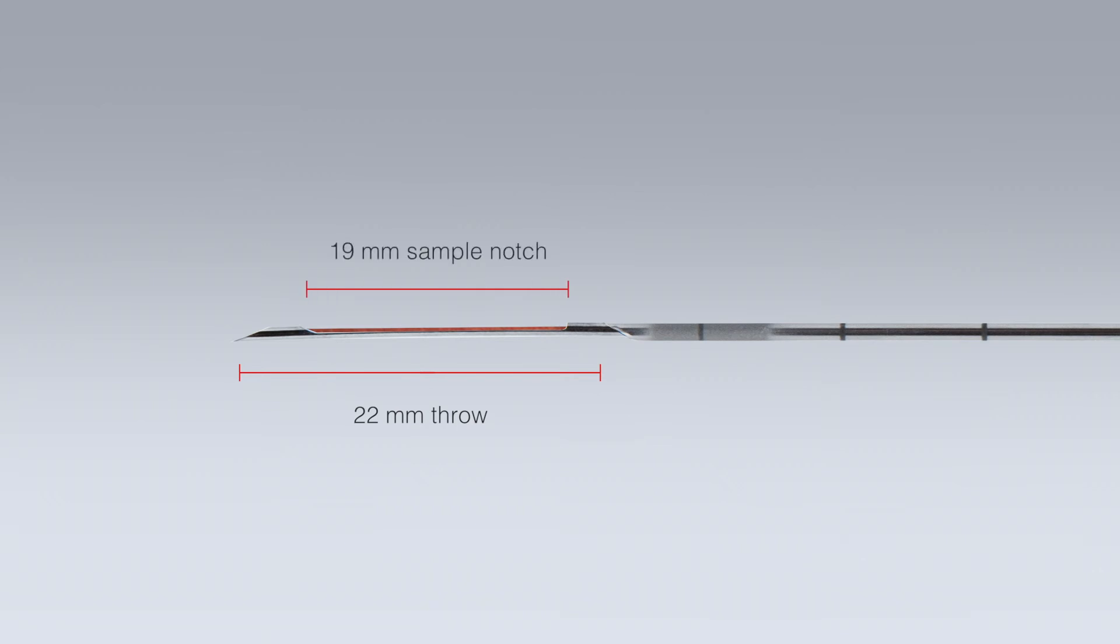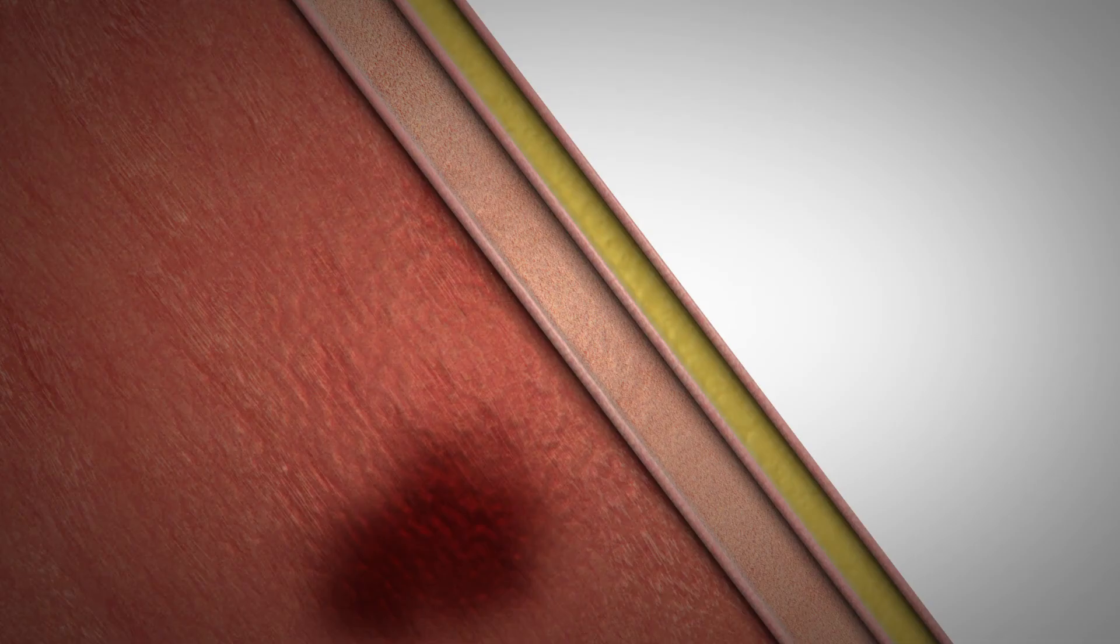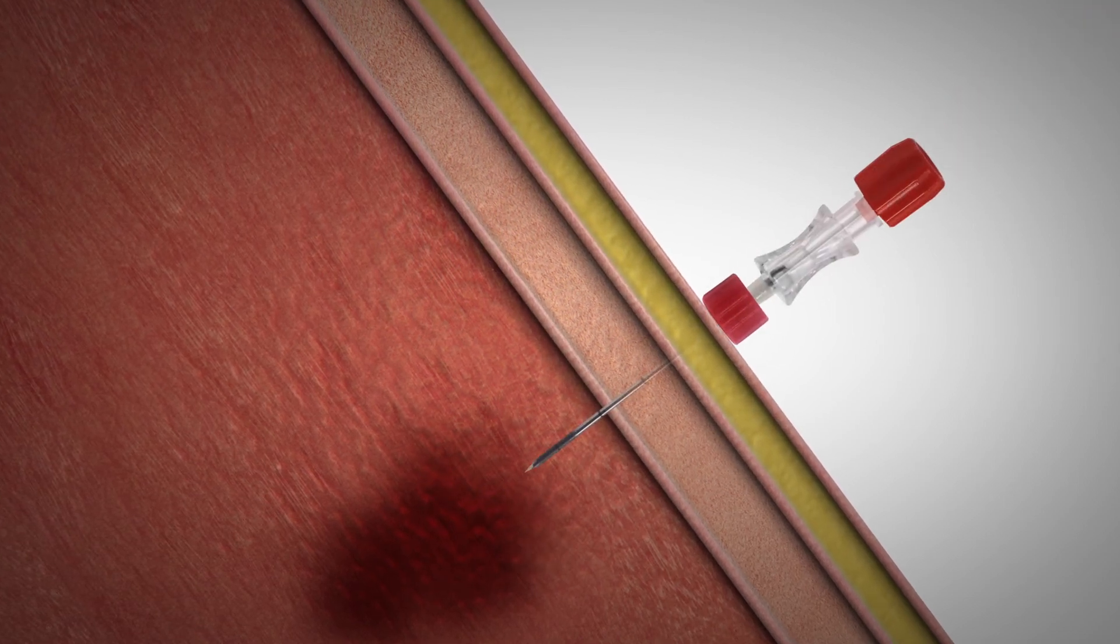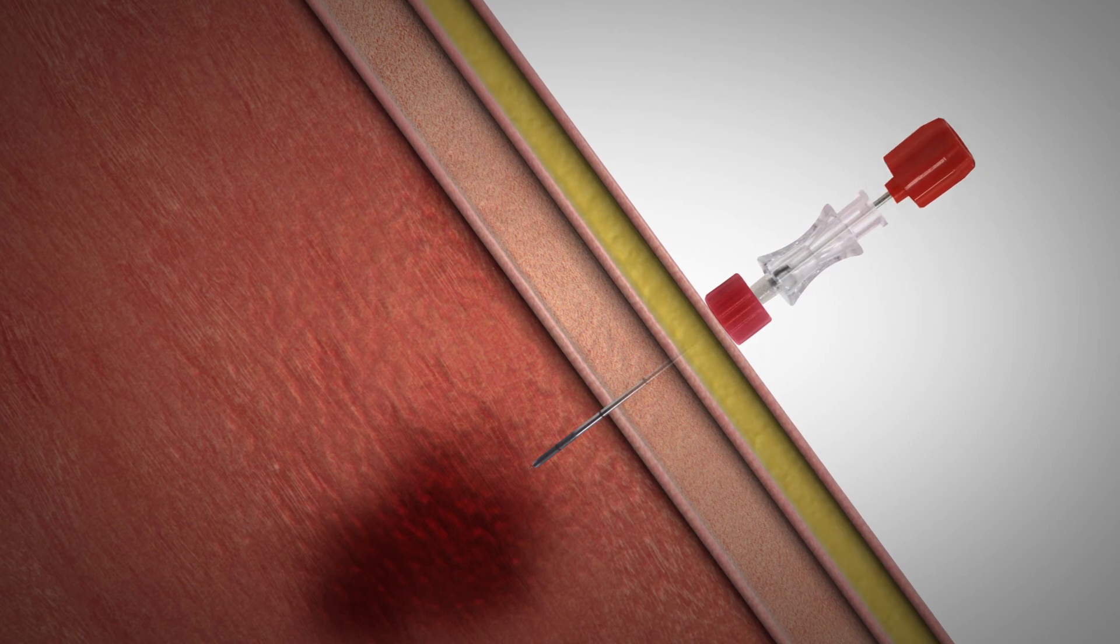If a coaxial needle is used for multiple biopsies, first insert the coaxial introducer needle with stylet to the point to be biopsied and remove the stylet.